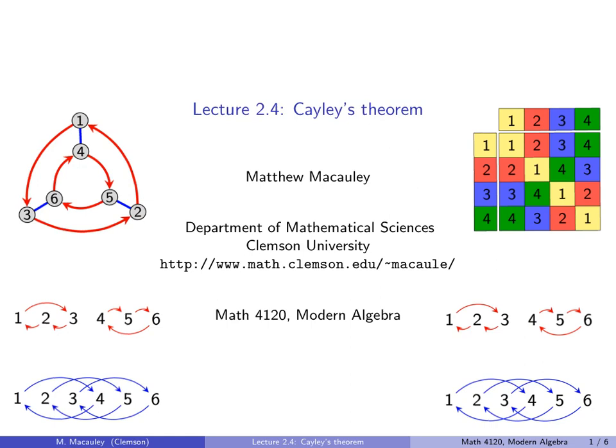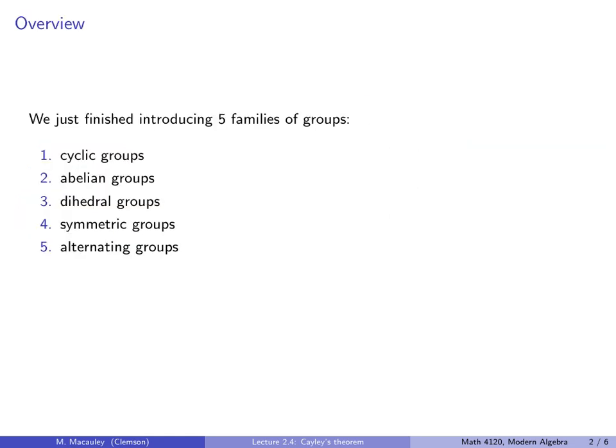Welcome to lecture 2.4, Cayley's Theorem. In this series of lectures we just finished introducing five families of groups: cyclic, abelian, dihedral, symmetric, and alternating groups.